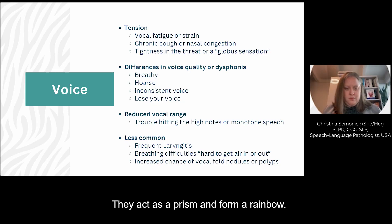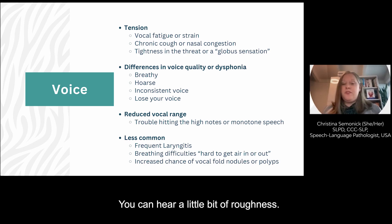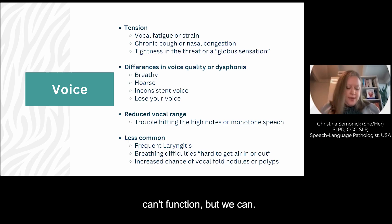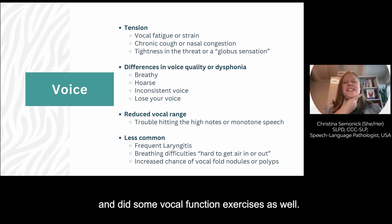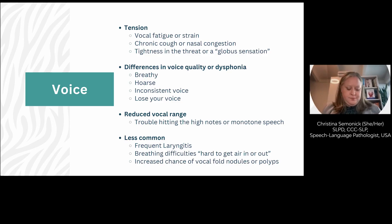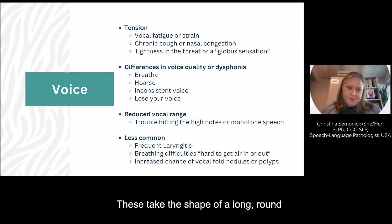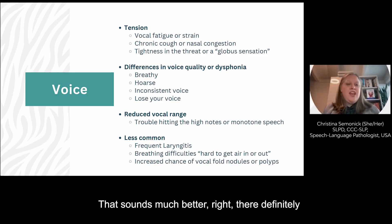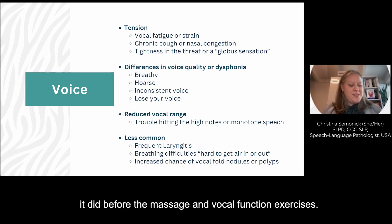When the sunlight strikes raindrops in the air, they act as a prism and form a rainbow. The rainbow is a division of white light into many beautiful colors. These take the shape of a long round arch with its path high above and its two ends apparently beyond the horizon. [After vocal massage and exercises:] When the sunlight strikes raindrops in the air, they act as a prism and form a rainbow. The rainbow is a division of white light into many beautiful colors. These take the shape of a long round arch with its path high above and its two ends apparently beyond the horizon. So that sounds much better — you can hear that it's light and bright, and it really sounds like my voice is much more musical than it did before the massage and vocal function exercises.